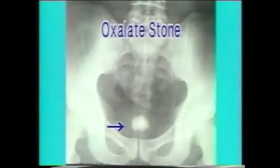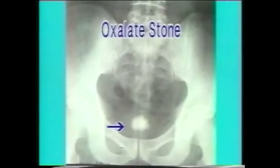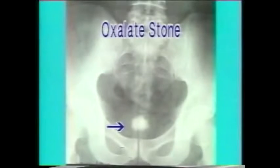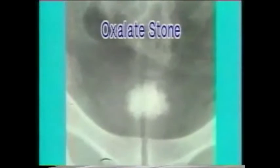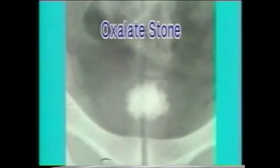This is a typical oxalate stone. It casts a very dense radio-opaque shadow and has a spiculated margin. In a closer view, note the spiculated margin and note that it is much denser than the bone shadow.